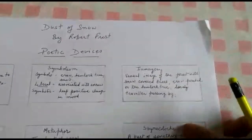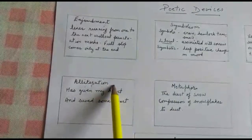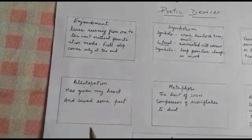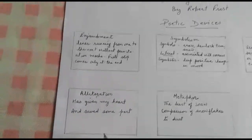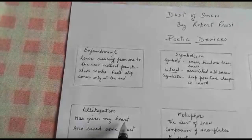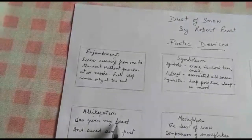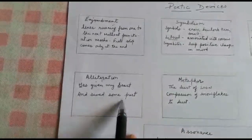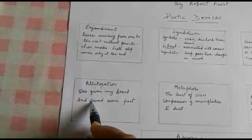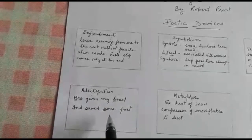We come to the next poetic device and that is alliteration. We've already studied about alliteration before. Alliteration is a repetition of a letter in the sentence. Here, 'has given my heart' — H and H in 'heart' is repeated. So this is alliteration. The next line is 'and save some part' — S and S is repeated. So this is alliteration. I'm sure all of you are already familiar with this.